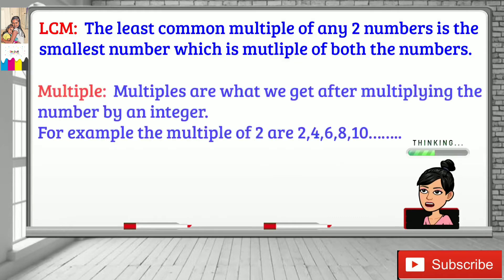What is a multiple? Multiples are what we get after multiplying the number by an integer. For example, the multiples of two are: two times one is two, two times two is four, two times three is six, and keep on going. One clue: multiples never end — they just keep on going.